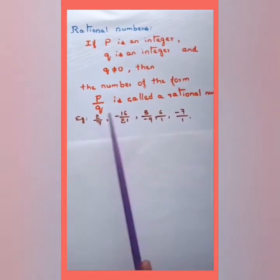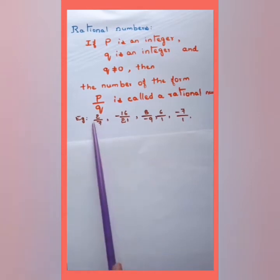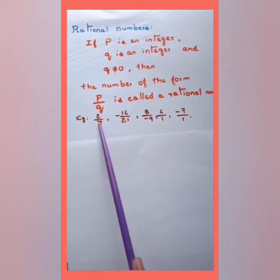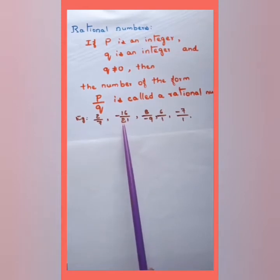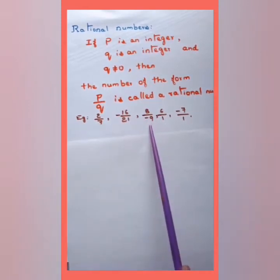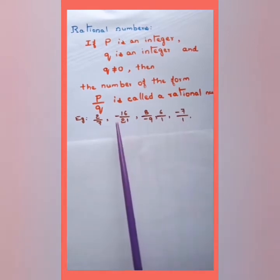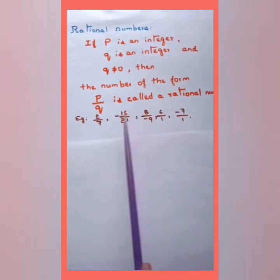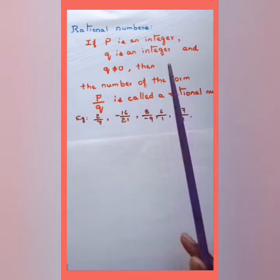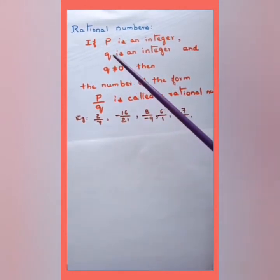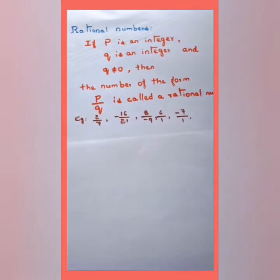A few examples of rational numbers: 2/3 is in the form p/q where the denominator is not equal to 0, so it is a rational number. Similarly, 16/21, 8/9, 6/1, and -7/1 are rational numbers. Even numbers with a minus sign, if written in the form p/q, are called rational numbers.